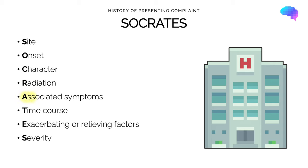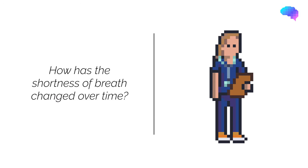We then explore whether there are any associated symptoms. The patient may not have mentioned these in open questioning, so it may be important to ask directly — for example, if they present with breathlessness, we might ask whether they are experiencing any chest pain. Time course refers to how the symptom has changed over time, building a picture since its onset — for example, how has the shortness of breath changed over time?